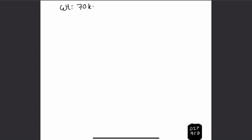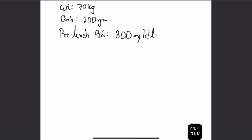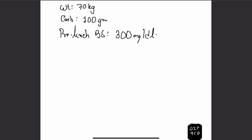Let's get started. Say we have a person whose weight is 70 kilograms and he's about to eat lunch. His lunch contains 100 grams of carbohydrate, and his pre-lunch blood sugar is 300 milligrams per deciliter. Currently, this person is not under any insulin therapy.